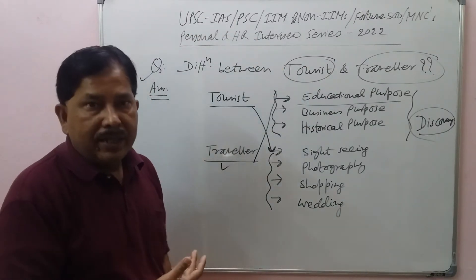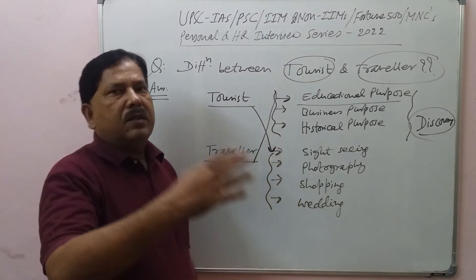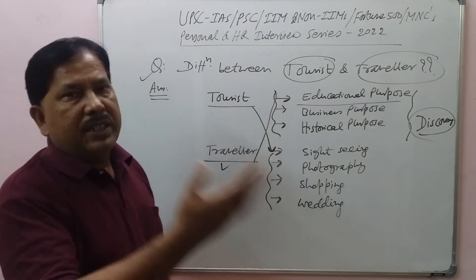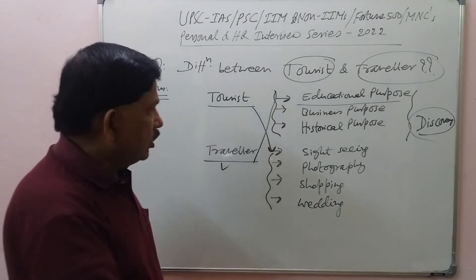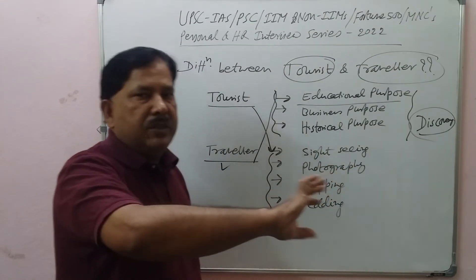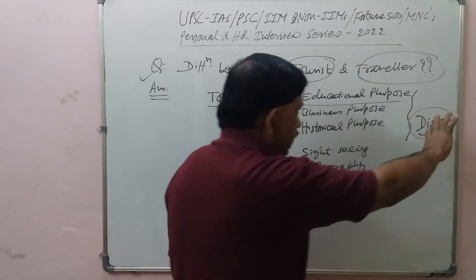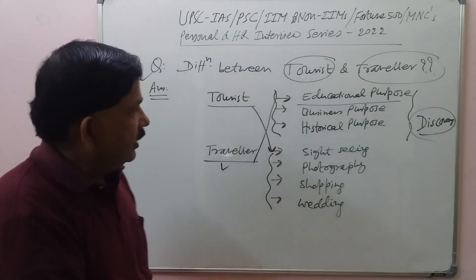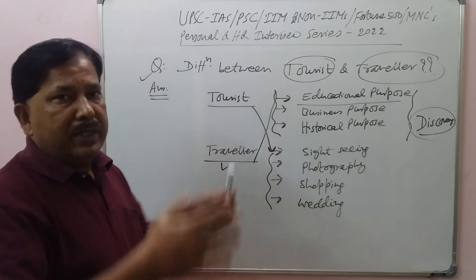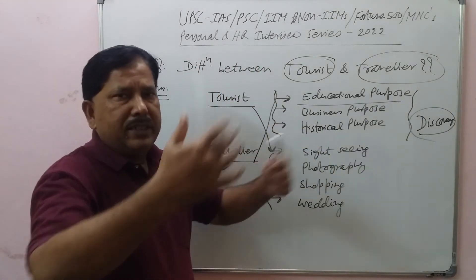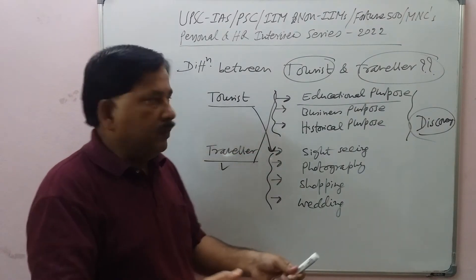For example, Chinese travelers came to India — to Bihar, to Nalanda University. Several travelers were there in those days. They came, they studied, they started businesses, and they also went for excavations. This is why a traveler means someone coming to a place — anywhere in the world — for long-term purposes under these three basic categories.